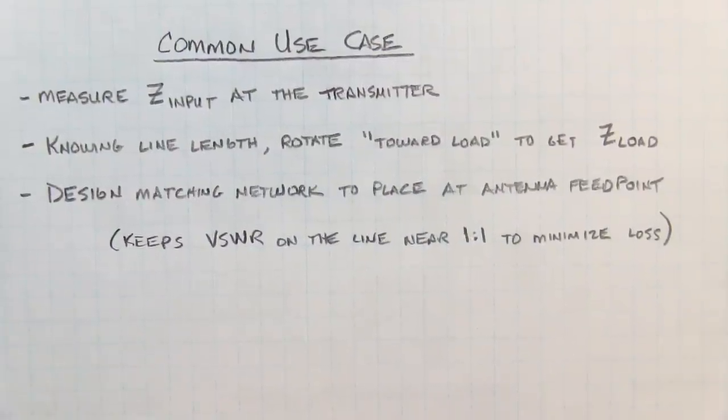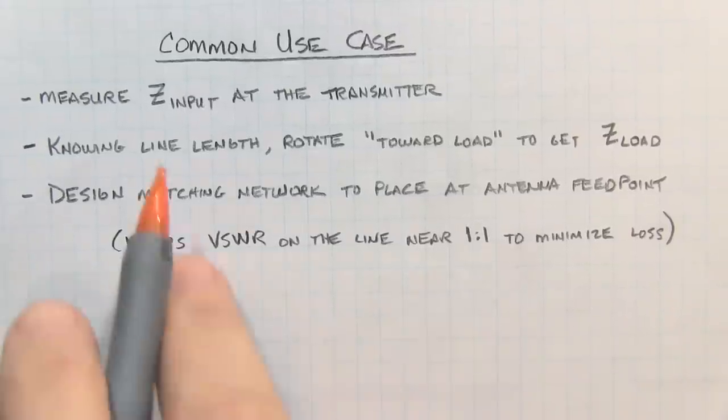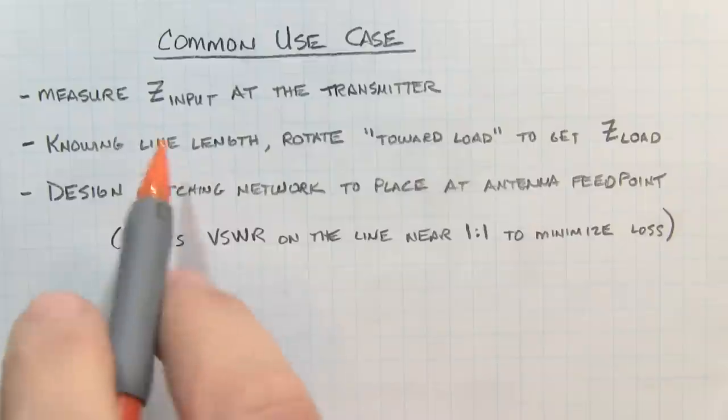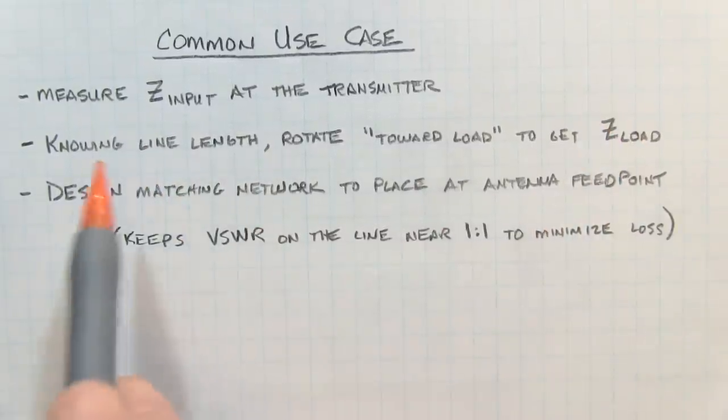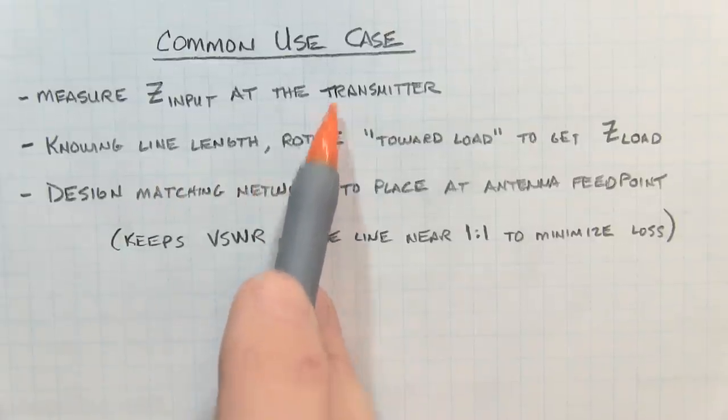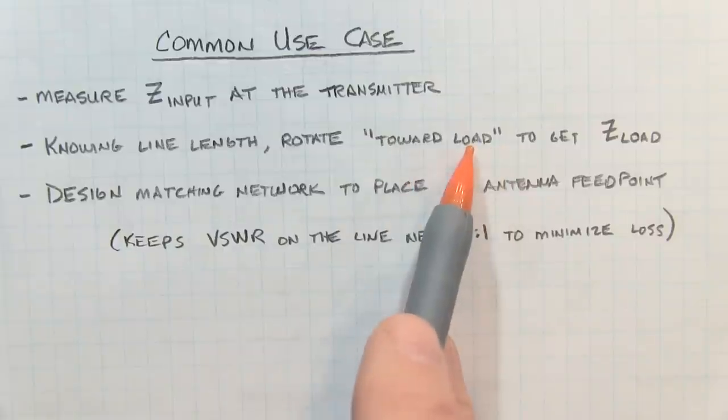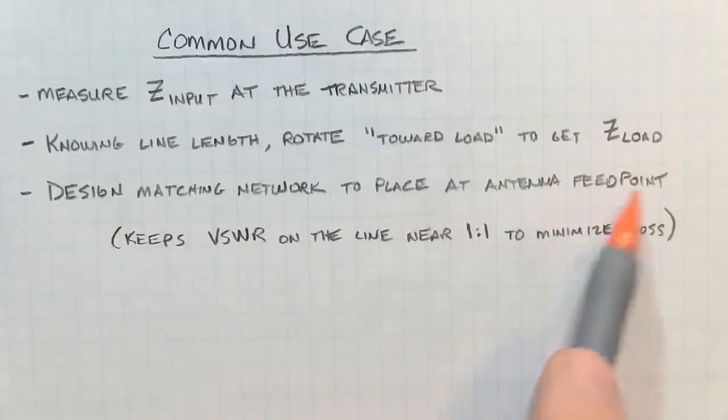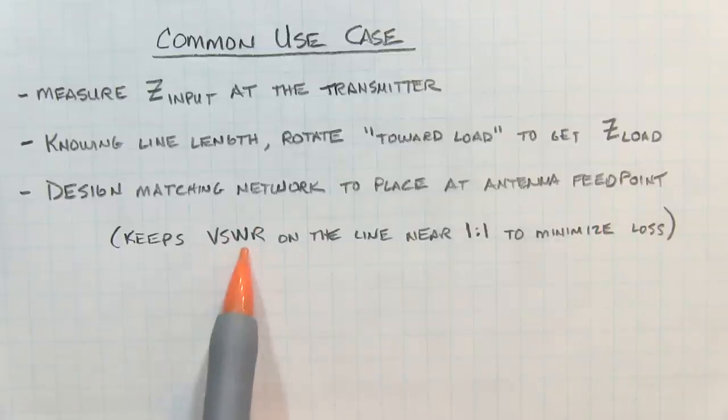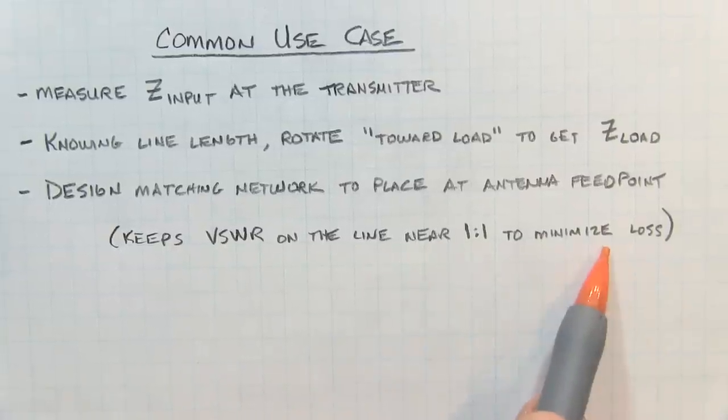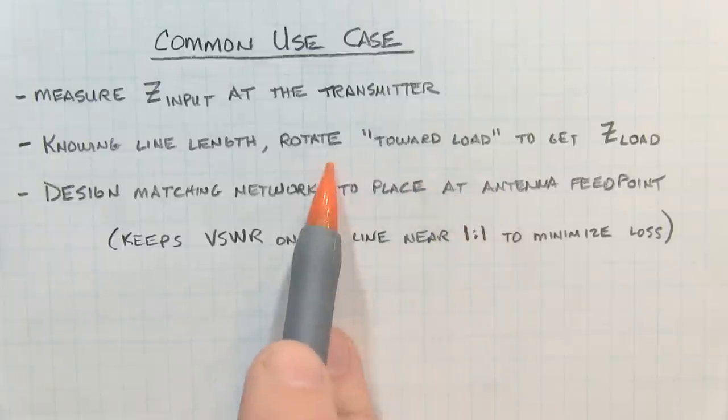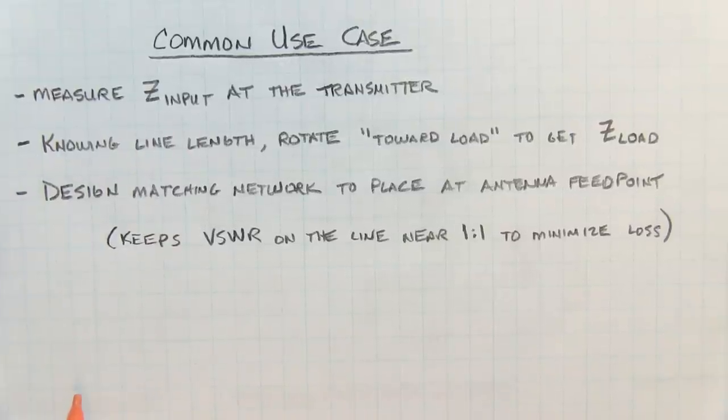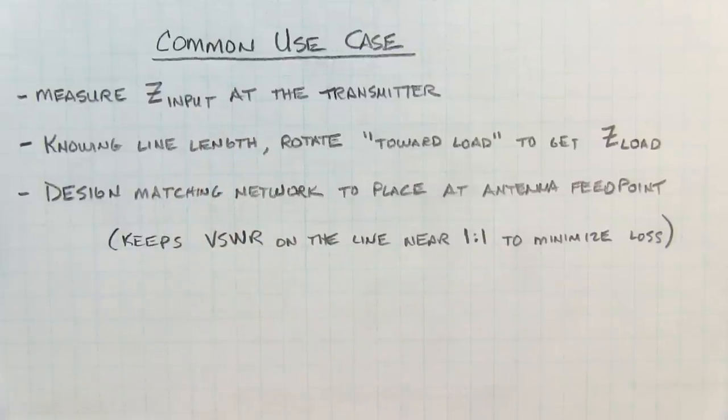A more common use case in amateur radio is almost going the other way. With an analyzer, you may measure the input impedance at the transmitter looking into the coax. If you know the line length, you can rotate towards the load to understand the actual impedance at the antenna feed point. Then you can design a matching network to place at the antenna feed point. That keeps the SWR on the transmission line near 1 to 1 and minimizes loss. You could design a matching network at the transmitter - it doesn't change the SWR on the line, but allows the transmitter to put out full power.